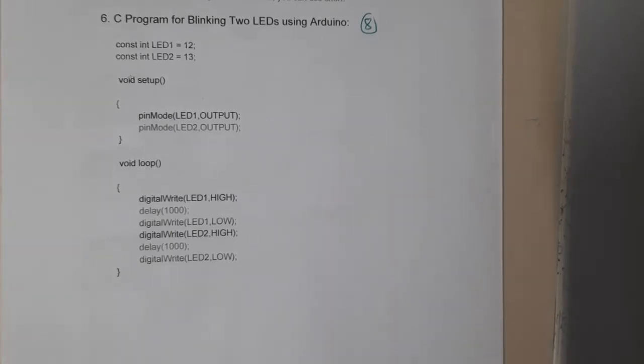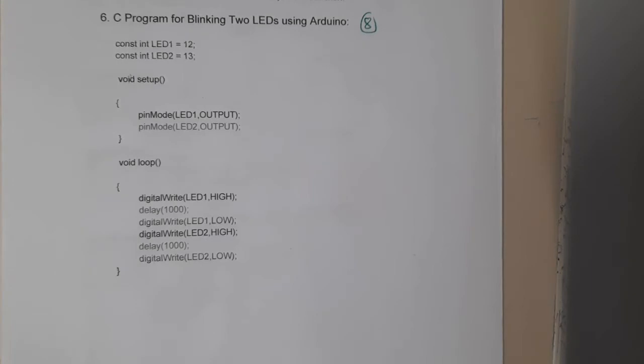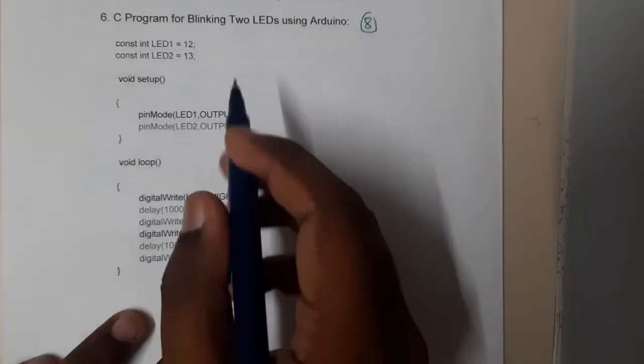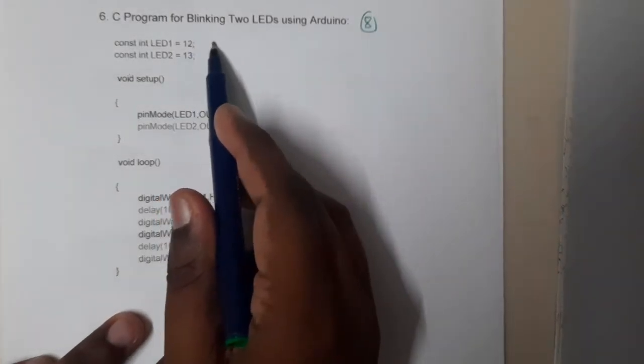Hello guys, we are back with our next lecture. In this lecture, let us go through a basic code on Arduino to blink two LED lights. Assume that you connected the LED lights to the pins.